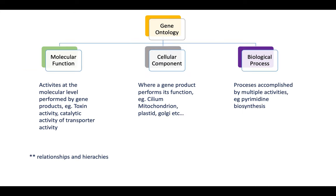Here is a bit more detail about these three arms of Gene Ontology. Molecular function talks about the activities at the molecular level performed by a gene, like a toxin, catalytic activity, or transporter activity. Cellular component talks about the location, like the cilium or the mitochondrion. And finally, biological process talks about the process where these gene functions are taking place, like pyrimidine biosynthesis. For example, you could have 20 genes all involved in pyrimidine biosynthesis, so now you know these genes are involved in that particular biological process.